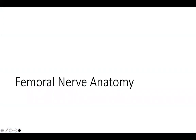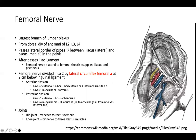Let's start with the femoral nerve anatomy. The femoral nerve is the largest branch of the lumbar plexus. It comes from the anterior rami of L2, L3, and L4. In the pelvis, it usually passes the lateral border of the psoas, and then runs between the iliacus and psoas in the pelvis.